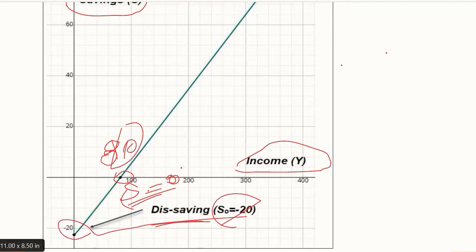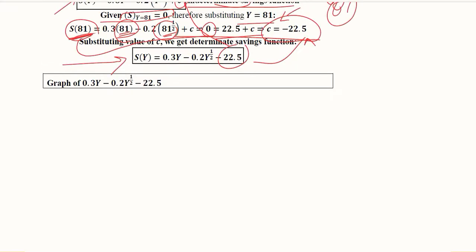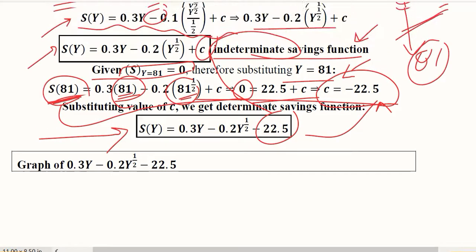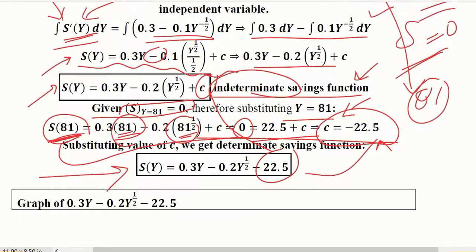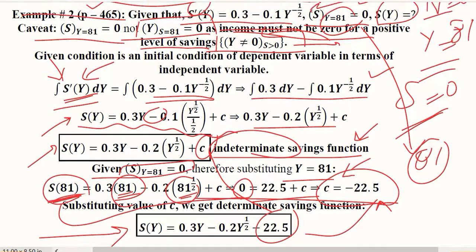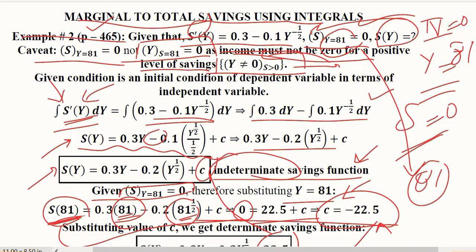Above that intercept is the part which is meaningful for us as students of economics. It shows that as income increases, savings increase as well. This is how we can solve the savings function. We can develop it from the marginal function using the given marginal function and the tool of integration. Thank you.